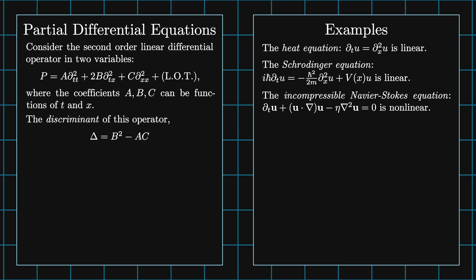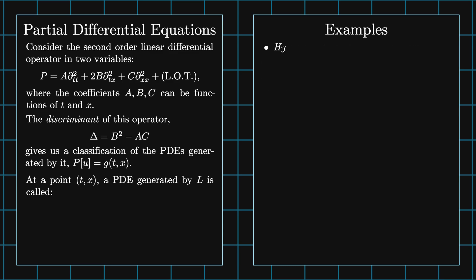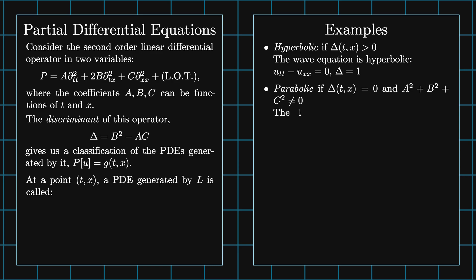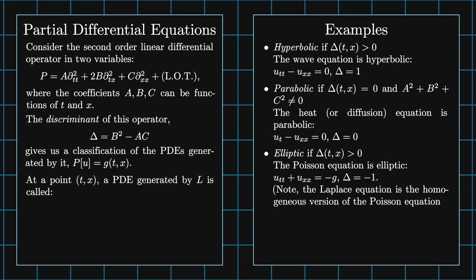The discriminant of this operator delta equals B squared minus AC gives us a classification of the PDEs P of U equals G of T and X. At the point T comma X, a PDE generated by P is called hyperbolic if delta is greater than zero. The wave equation U TT minus U XX equals zero has delta equal to one and therefore is hyperbolic. A PDE is called parabolic if delta equals zero and A squared plus B squared plus C squared is not equal to zero. The heat or diffusion equation U T minus U XX equals zero has delta equal zero and therefore is parabolic. A PDE is called elliptic if delta is less than zero. The Poisson equation U TT plus U XX equals minus G has delta equal to minus one and therefore is elliptic. Note that the Laplace equation is the homogeneous version of the Poisson equation. And lastly, a PDE is called singular if A equals B equals C equals zero.